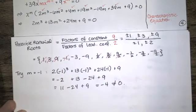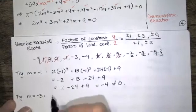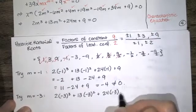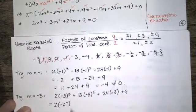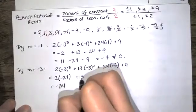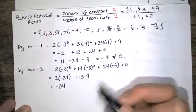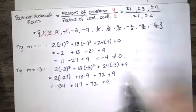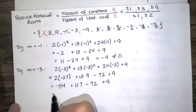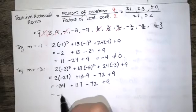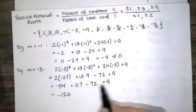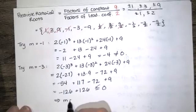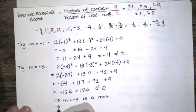Let's try m equals negative 3: 2 times (negative 3) cubed plus 13 times (negative 3) squared plus 24 times (negative 3) plus 9 gives negative 54 plus 117 minus 72 plus 9. That's negative 126 plus 126, which equals 0. So m equals negative 3 is a root, which means m plus 3 is a factor.